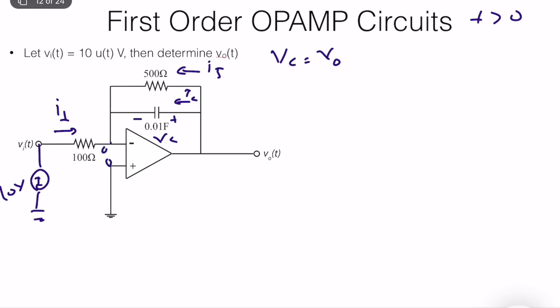This is zero, this is zero volts, and there's no current here, there's no current here. So we can write a Kirchhoff current law at this node, which says that I1 plus I5 plus Ic is equal to zero. What is I1? I1 is equal to 10 divided by 100. What is I5? I5 is equal to Vc divided by 500. And what is Ic? Ic is equal to C times dVc over dt, equal to zero.